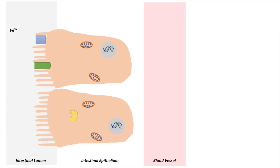Say you've ingested iron in your diet and you've got Fe3+ (iron 3+) in your intestinal lumen. What will happen is that Fe3+ will come into contact with a protein on an enterocyte — an enterocyte is just a cell that lines or makes up the intestinal epithelium. Fe3+ will come into contact with a protein known as duodenal cytochrome B, which lies on the luminal side of an enterocyte.